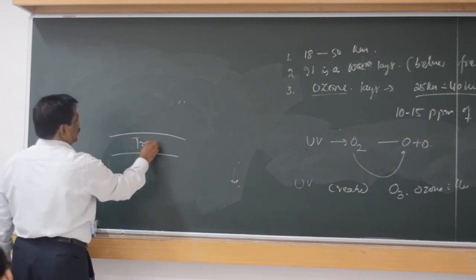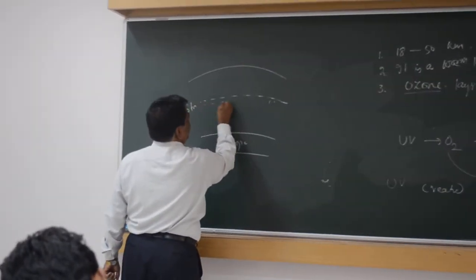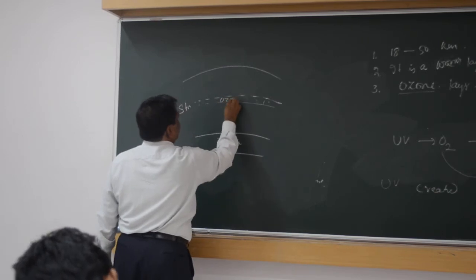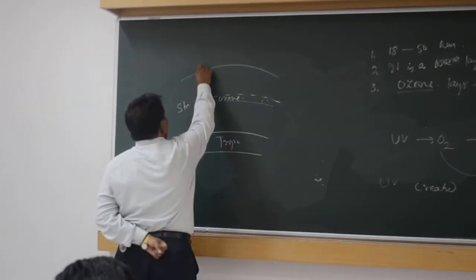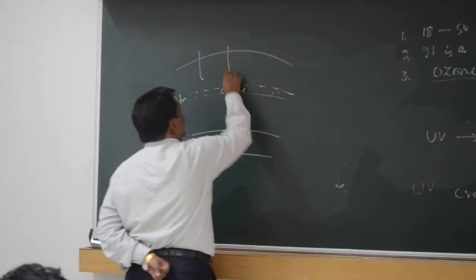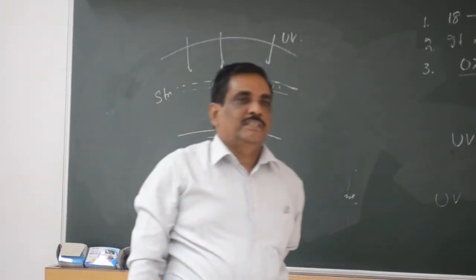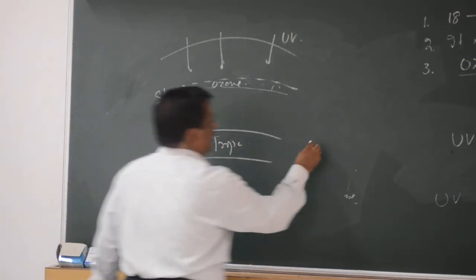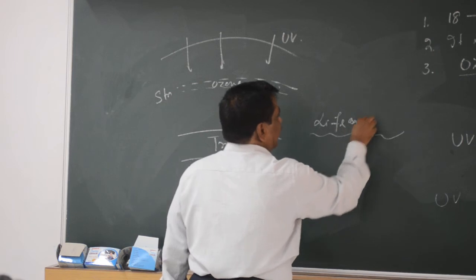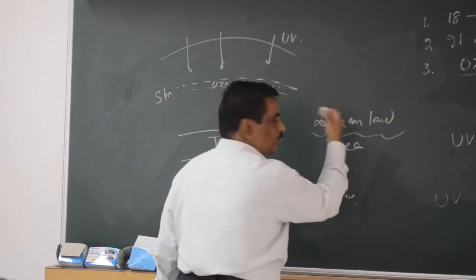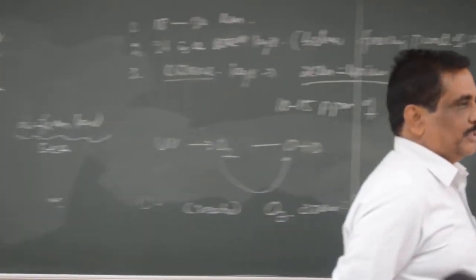So this is troposphere, this is stratosphere. Here the ozone layer was created. So now, the ultraviolet ray cannot penetrate. Do you understand this diagram? This ultraviolet ray cannot penetrate. So the life could now survive on the land. Actually in the sea, both exorbitant light start to avoid.